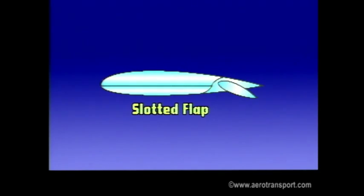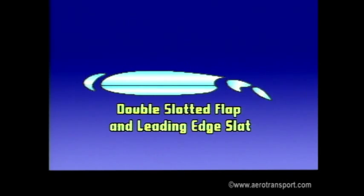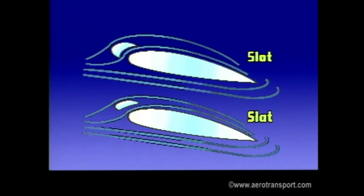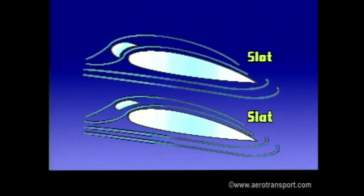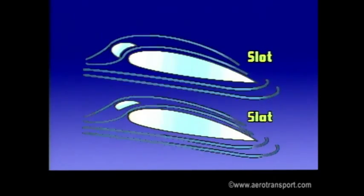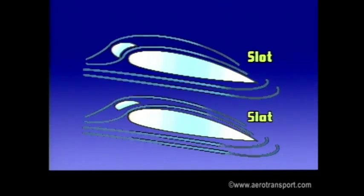There are several types of flaps: plain, slotted, split, zap, the Fowler flap, double slotted, and double slotted flap and leading edge slat. Slots and slats are devices on the leading edge of the wing which improve the airflow or laminar layer of air over the wing at low speeds. These may be fixed or controlled by the pilot and are generally found on airplanes with special performance requirements.